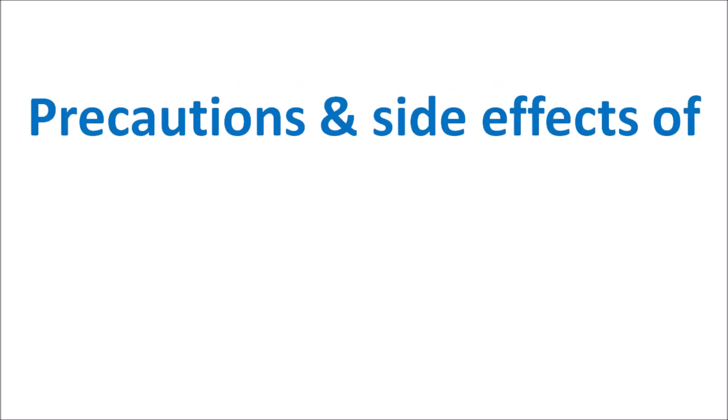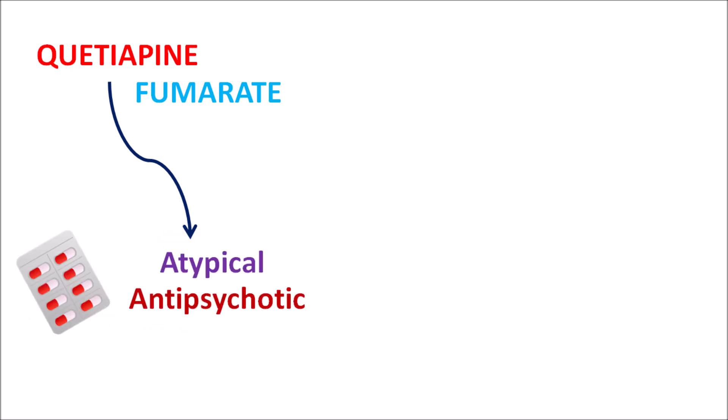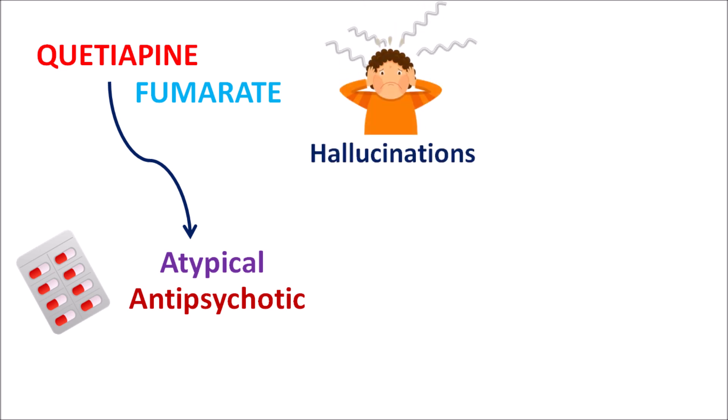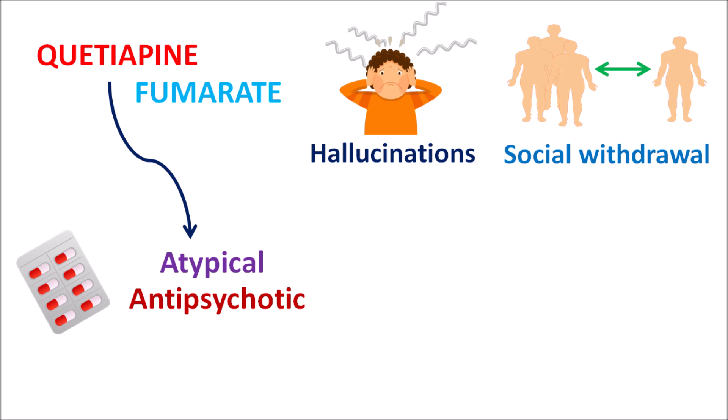Today in this video let us discuss precautions and side effects of Quetiapine. Quetiapine is one of the antipsychotics given in the form of Quetiapine fumarate. This drug is available as a tablet and it is an atypical antipsychotic. Being an antipsychotic, this drug can reduce psychotic disorders. Quetiapine can reduce the positive symptoms of schizophrenia such as hallucinations, where the patient can feel either auditory or visual hallucinations even when no sound or light exists. Quetiapine can also reduce delusions and wrong perceptions, which are classified as positive symptoms of psychosis, as well as social withdrawal, which is a negative symptom of schizophrenia.